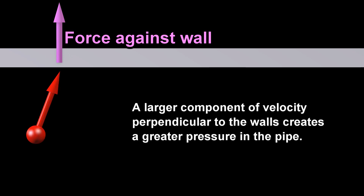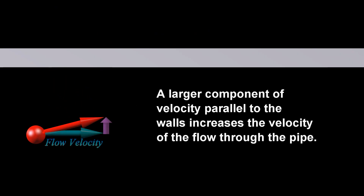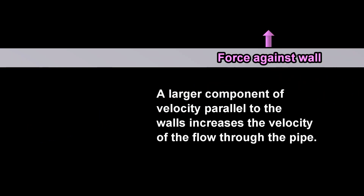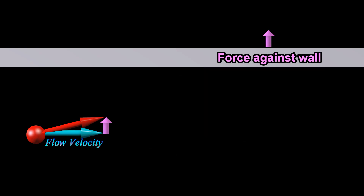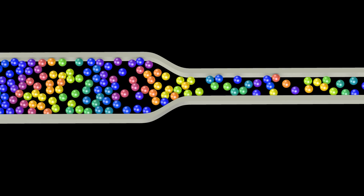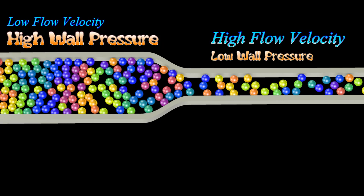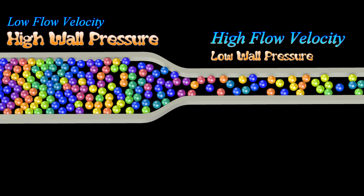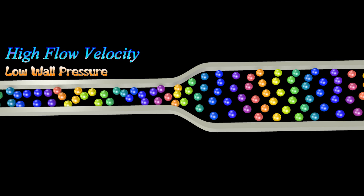A larger component of velocity parallel to the walls increases the velocity of the flow through the pipe. Hence, the atoms in the narrow section will exert a smaller pressure on the walls but will have a larger flow velocity.